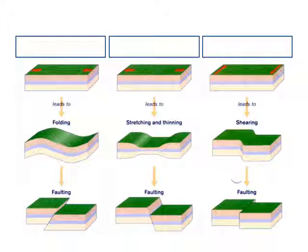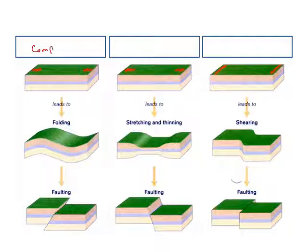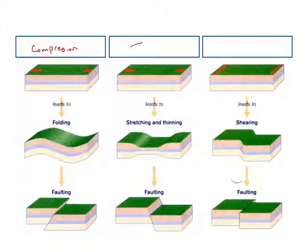Here I've got my different forces. Obviously here I've got my compression - it collides so much that the rock falls, buckles and breaks creating an overthrust fault. Then I've got my tension, and then I have my shearing.